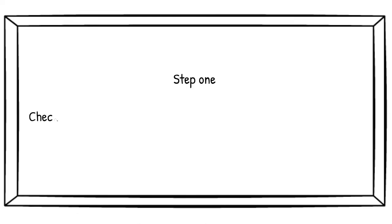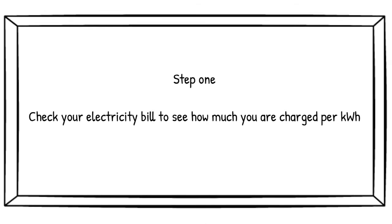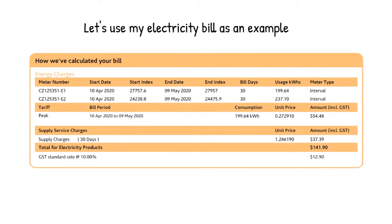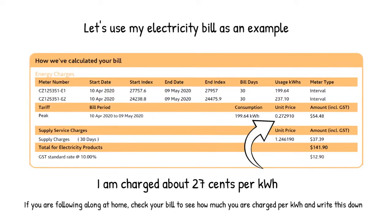Step 1: You will need to check your electricity bill to see how much you pay per kilowatt hour. This here is a copy of one of my electricity bills that I will use as an example throughout this video, and you can see here that I am charged about 27 cents per kilowatt hour.